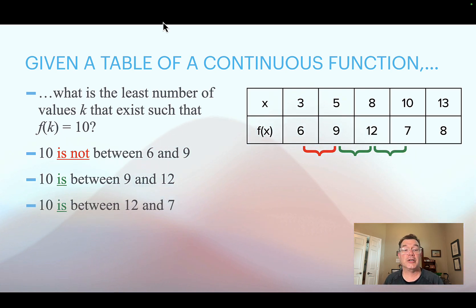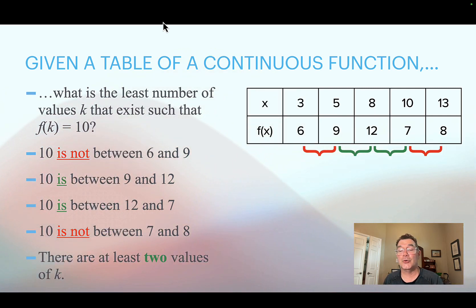And that goes for the third interval as well, going from x equals 8 to x equals 10. I'm starting at 12 as a y-value, ending at 7. 10 is between there, so I'm bound to hit a y-value of 10 at least once. And then in the last sub-interval from x equals 10 to x equals 13, the y values only go from 7 to 8. 10 is not between those, so I don't know if I'm going to hit a y-value of 10 between x equals 10 and x equals 13. But I do know that because of those two green brace brackets there, I am going to hit a value of 10 at least twice. Maybe more, but at least twice. So there are at least two values of k where f(k) is going to equal 10.